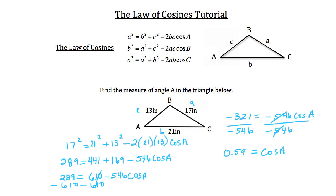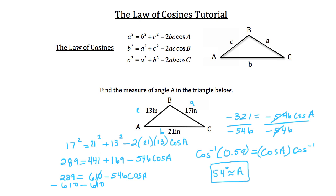Now we want to solve for angle A, not the cosine of angle A. So I'm going to take the inverse cosine of both sides of the equation. When I do that, we find that angle A has an approximate measurement of 54 degrees. That's how we use the Law of Cosines to solve for a missing angle when the three sides are given.